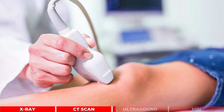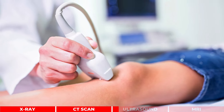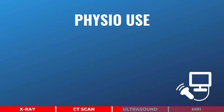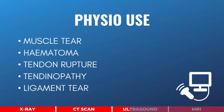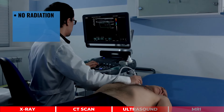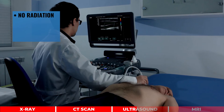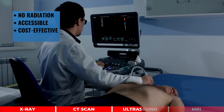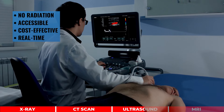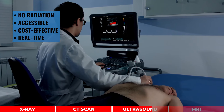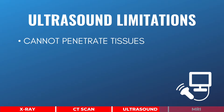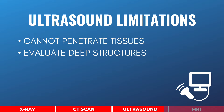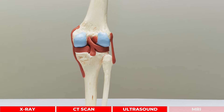Ultrasound uses high-frequency sound waves to produce an image. Physiotherapists commonly use ultrasound to evaluate soft tissues such as the muscle, tendon, and ligament. Ultrasound has many benefits: it does not expose a person to any radiation, they are readily available and cost-effective, and most importantly, they can be performed during movement. This is particularly helpful in the evaluation of shoulder impingement. The main limitation of ultrasound is it cannot penetrate the tissues and produce an image of deep structures such as the meniscus and the ACL.